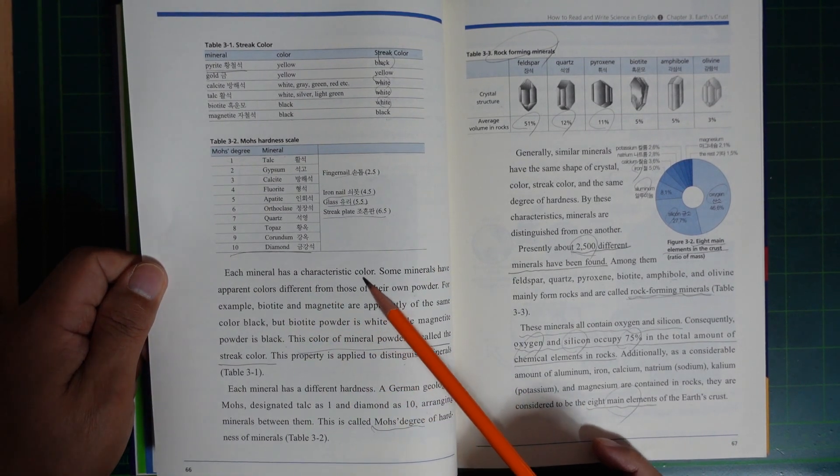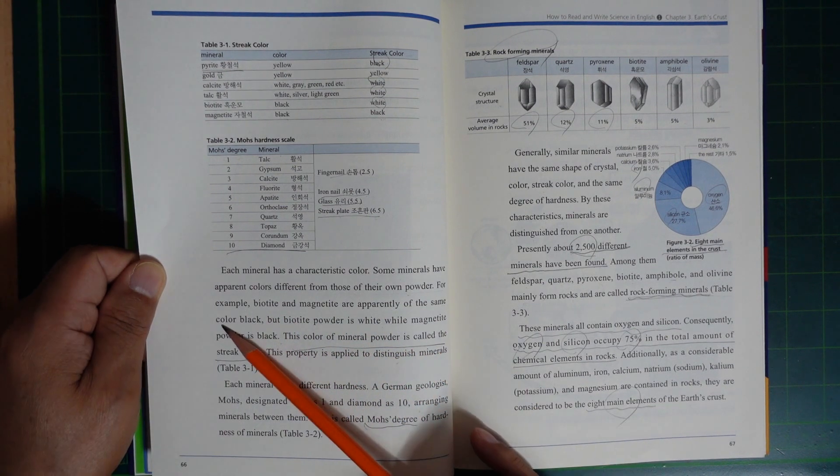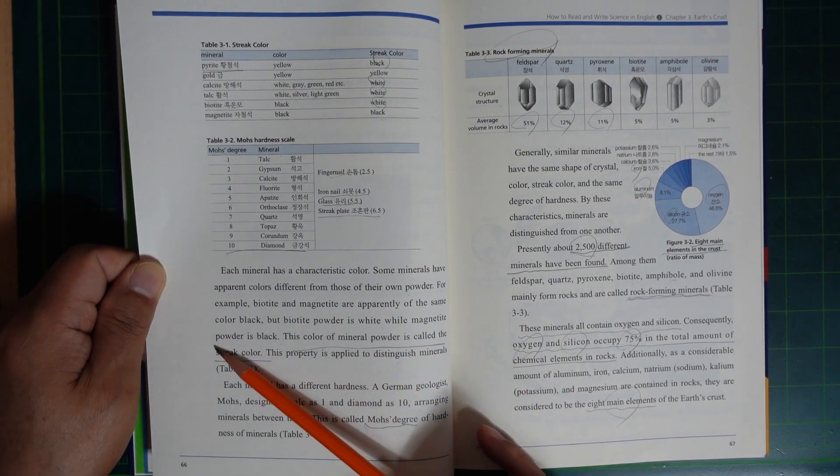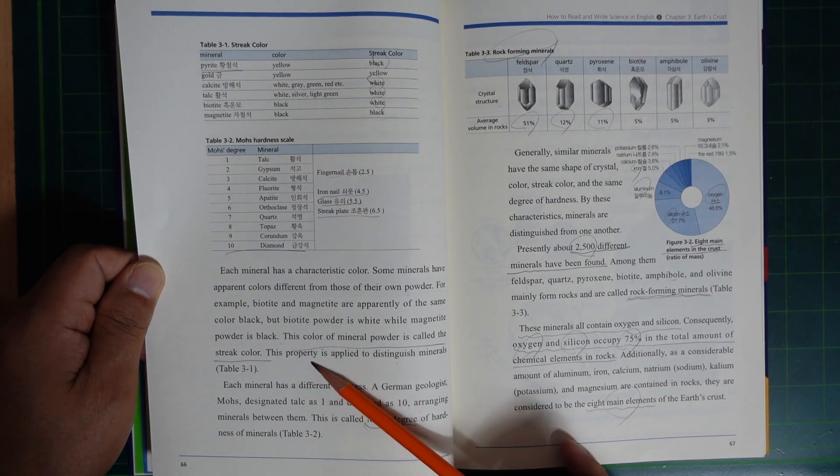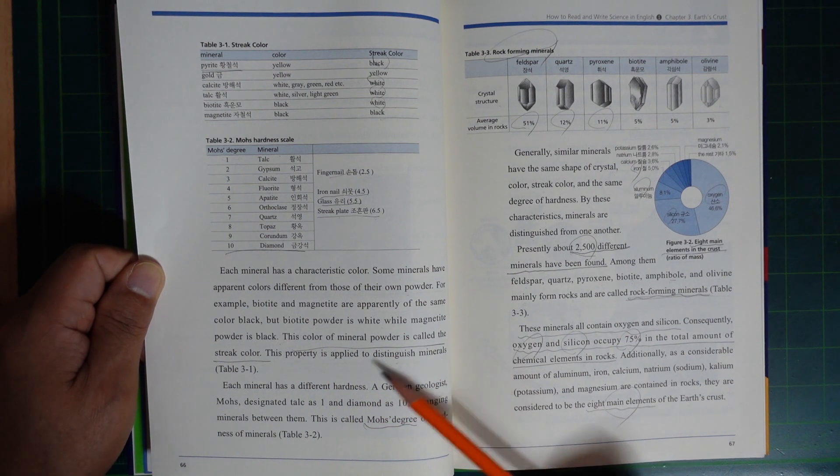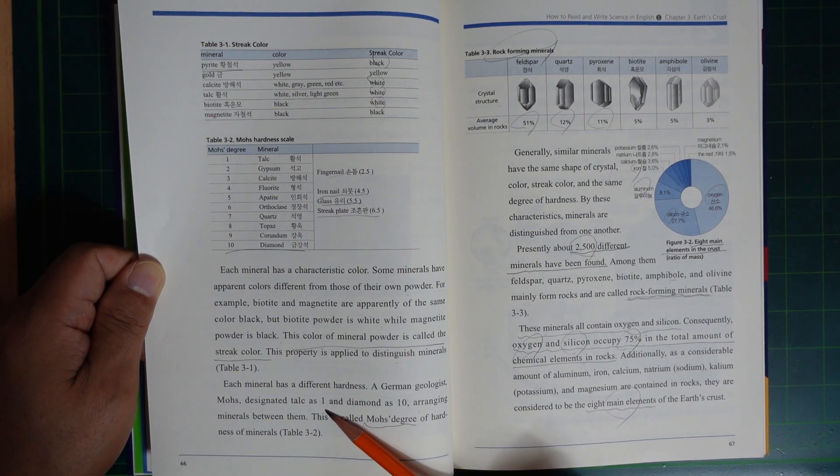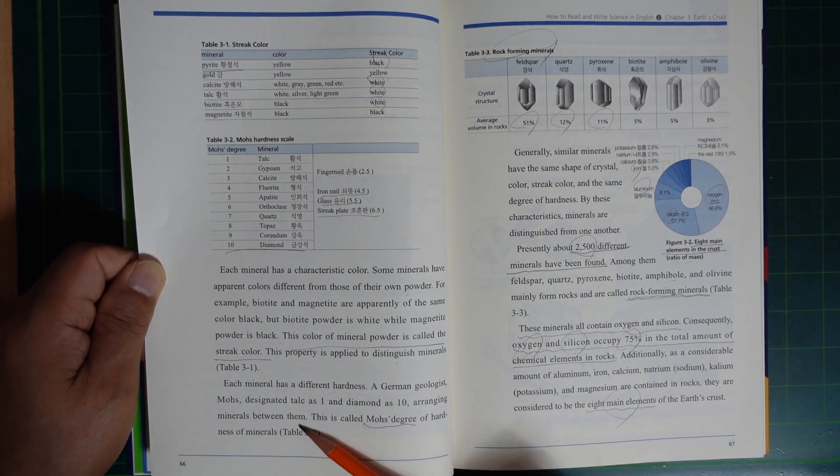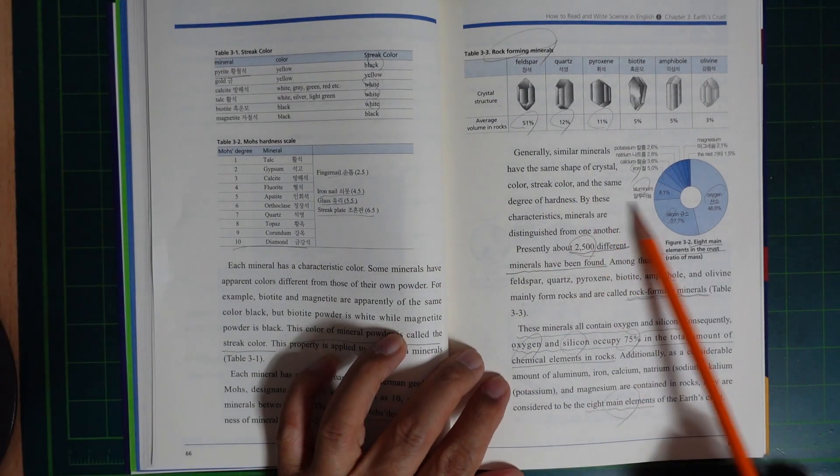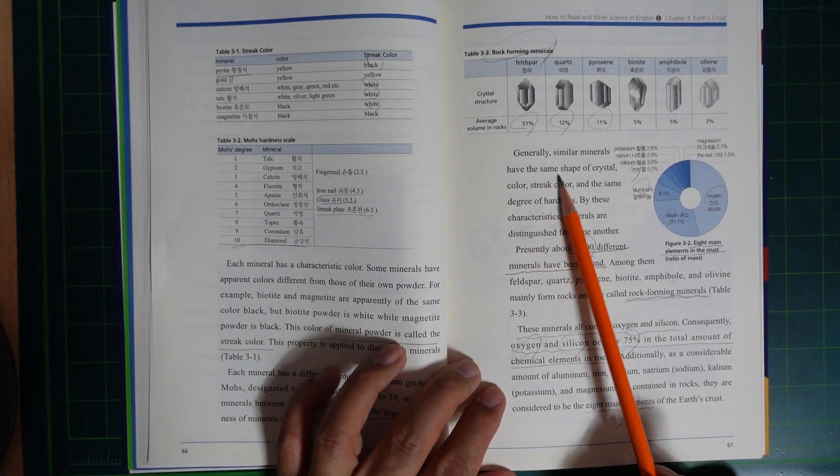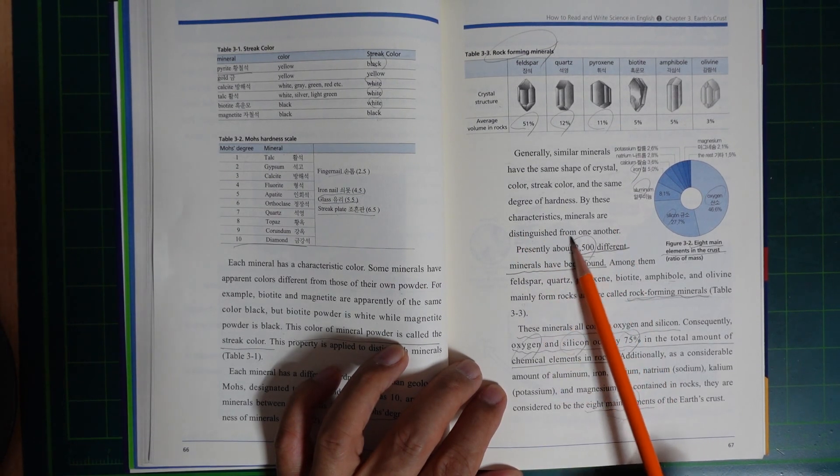Which mineral has a characteristic color? Some minerals have apparent color different from those of their own powder. For example, biotite and magnetite are apparently of the same color, black. But biotite powder is white while magnetite powder is black. The color of mineral powder is called the streak color. This property is applied to distinguish minerals. Minerals have different hardness. A German geologist Mohs designated talc as 1 and diamond as 10, arranging minerals between them. This is called Mohs degree of hardness. Generally, similar minerals have the same shape of crystal, color, streak color, and the same degree of hardness. By these characteristics, minerals are distinguished from one another.